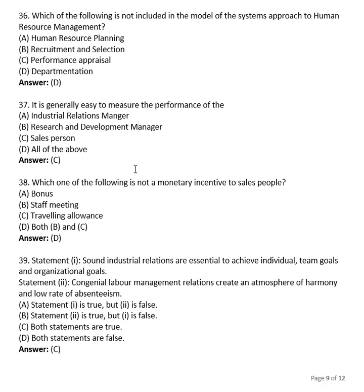Question 35: It is generally easy to measure the performance of: (A) industrial relations manager, (B) research and development manager, (C) salesperson, (D) all of the above. The right answer is (C), salesperson — because performance depends on the quantity or amount of sales made, making it relatively straightforward to measure.